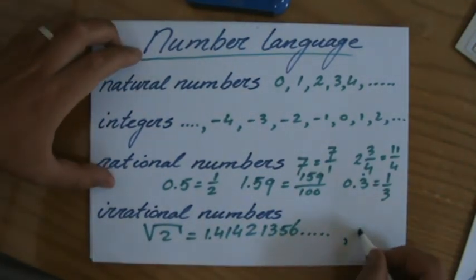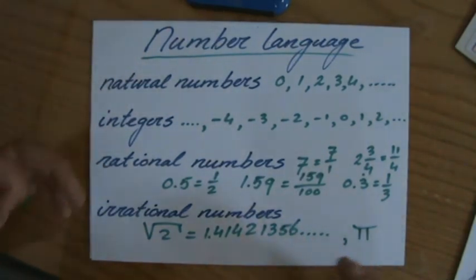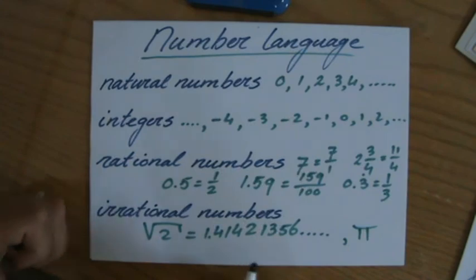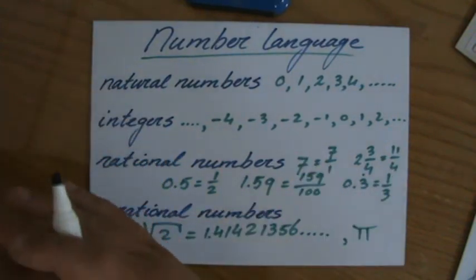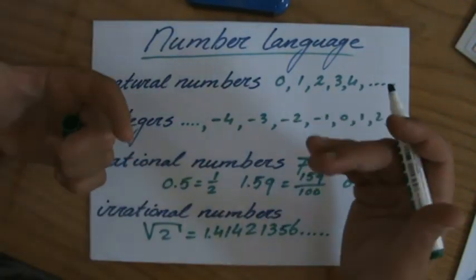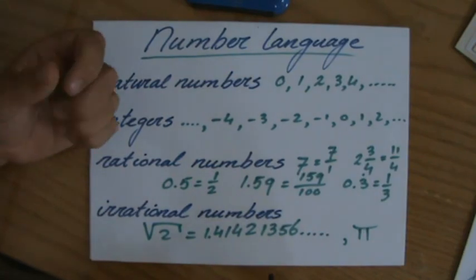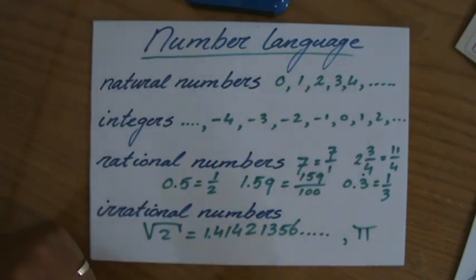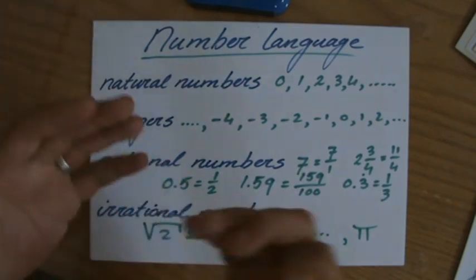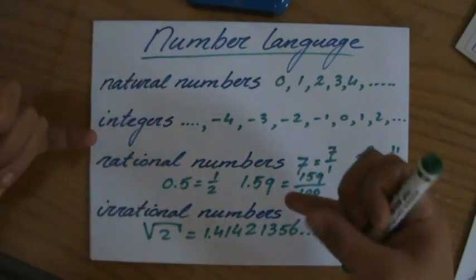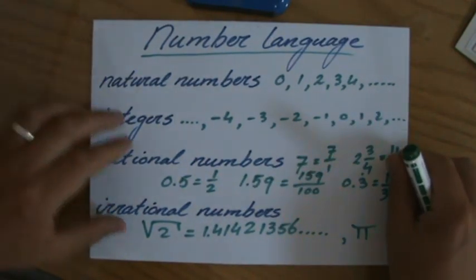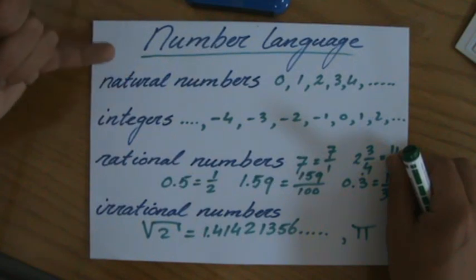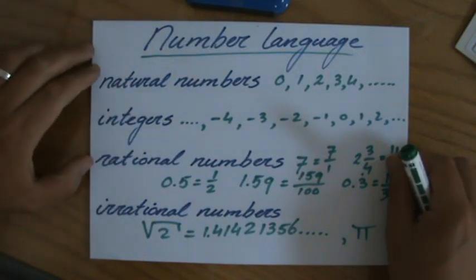A very famous irrational number is pi, which shows the relationship between the diameter of a circle and its circumference. In your calculator it shows 3.14 followed by an infinite amount of decimals — we still don't know exactly what pi is. We can get close, but we can't capture it in a fraction, so it's irrational. Finally, real numbers are rational and irrational numbers together. So to summarize: natural numbers, integers, rational numbers, and irrational numbers.